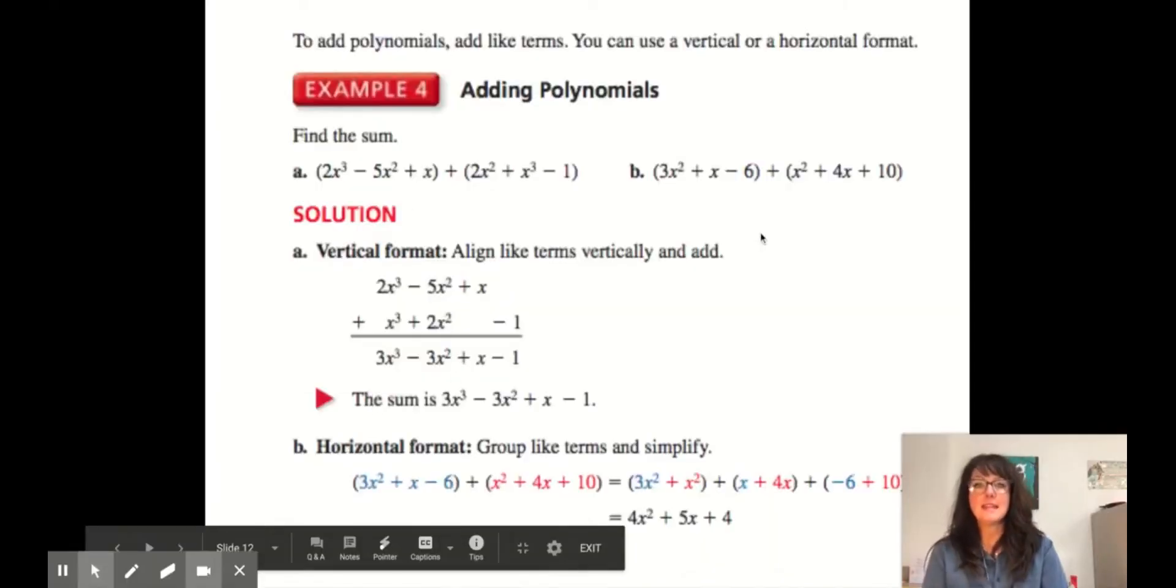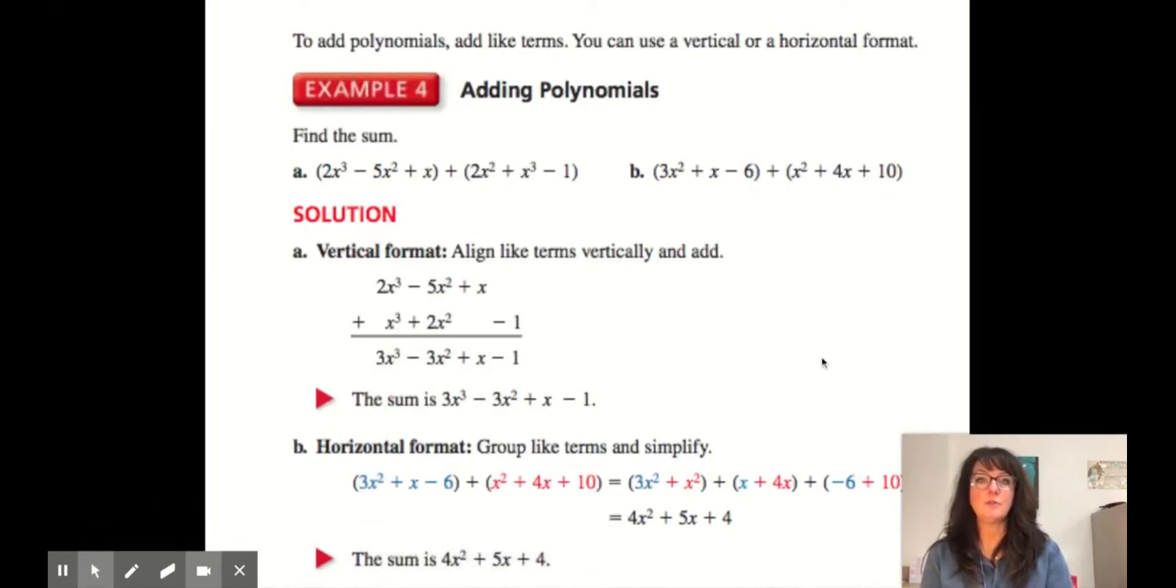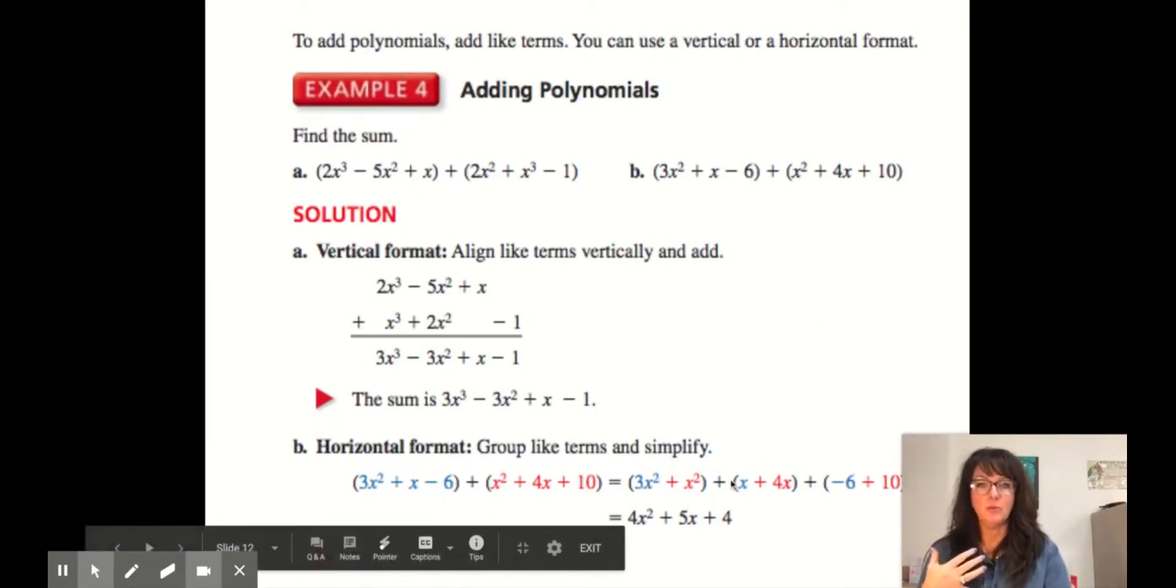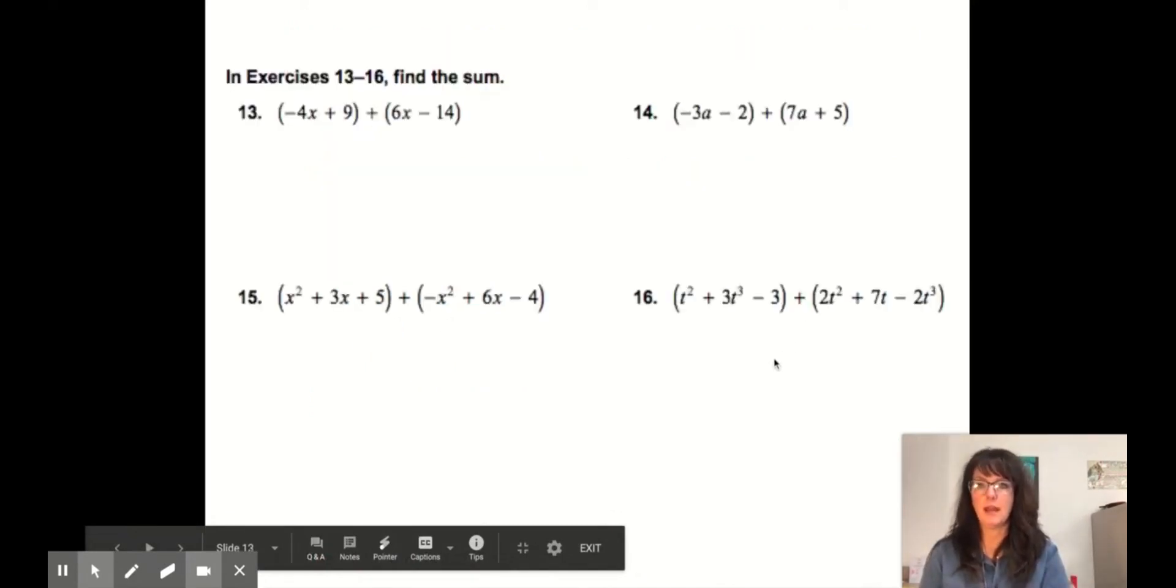Now we're going to be adding them. So to add polynomials, you want to add like terms. You can use vertical or horizontal method. I will not be showing you the vertical. I'm actually going to be showing you this, but not with as many steps.